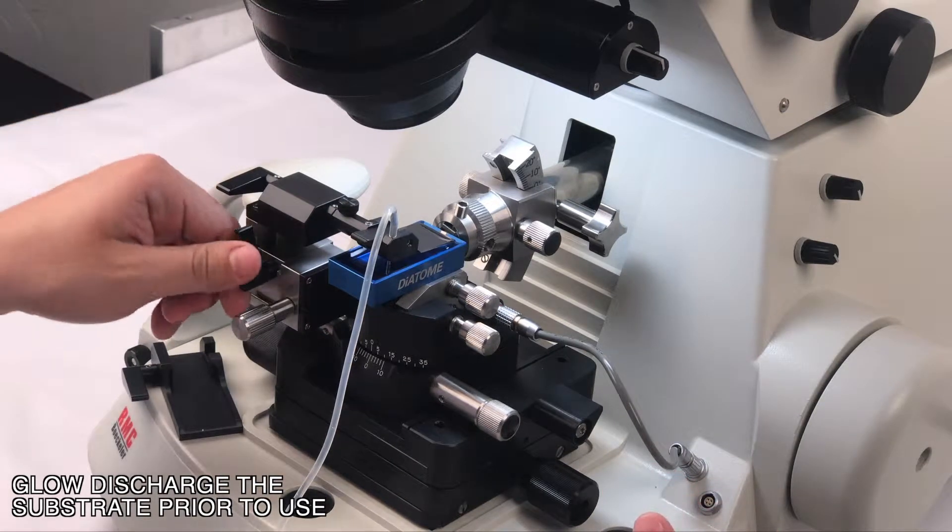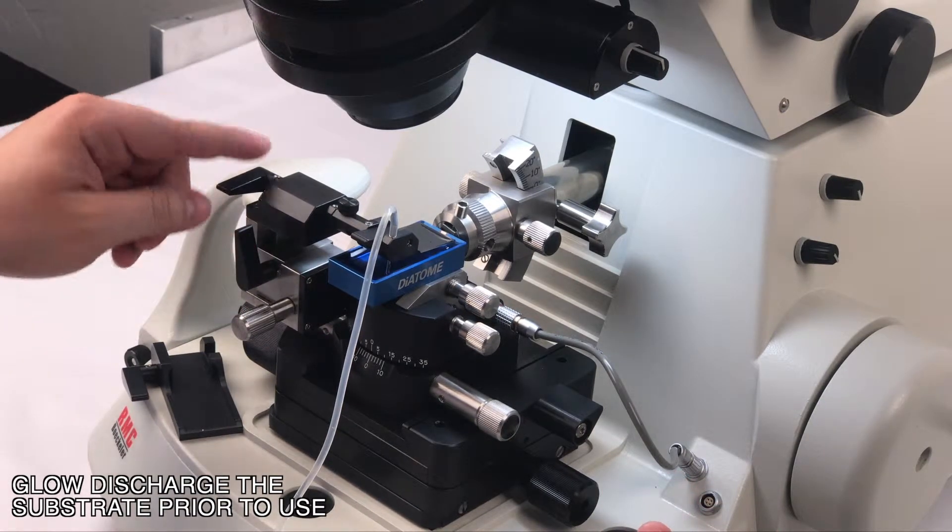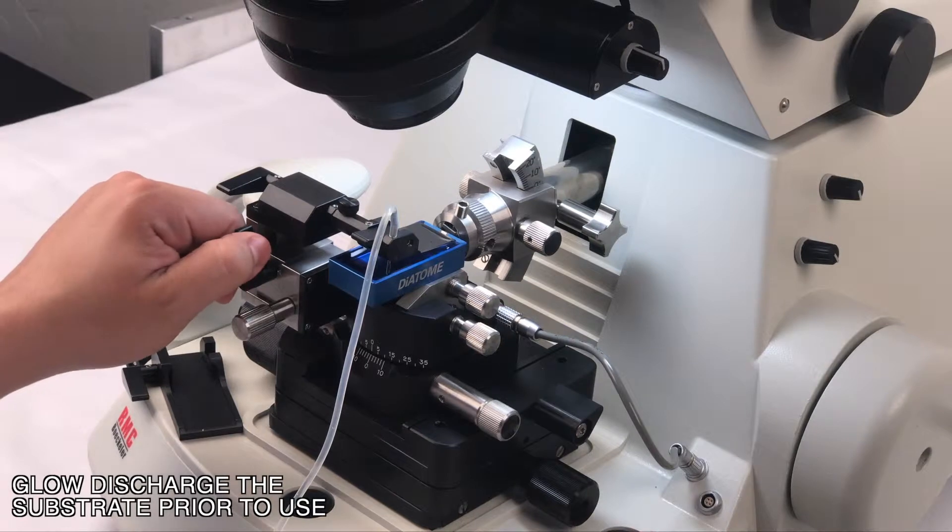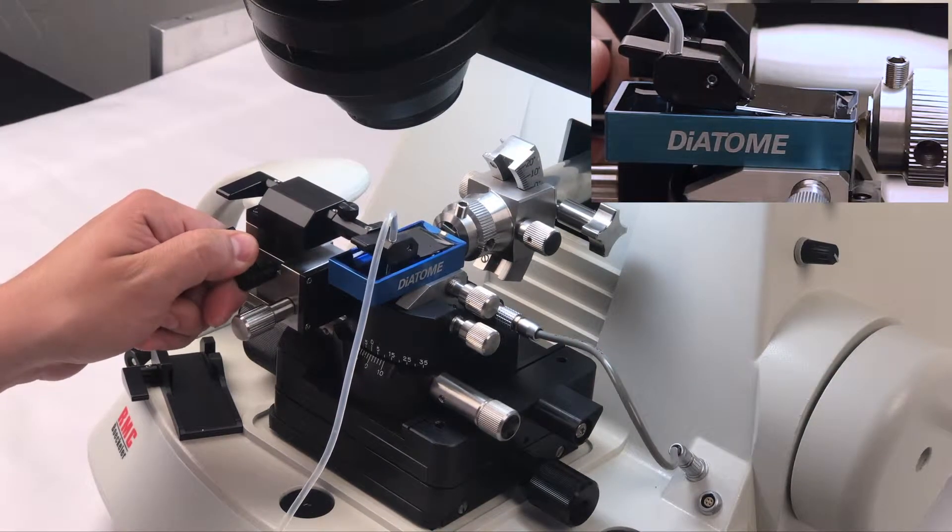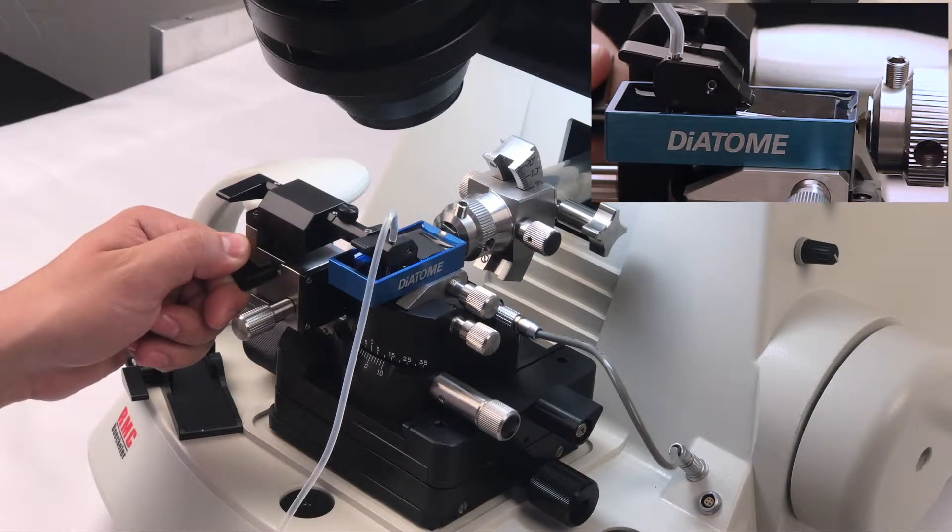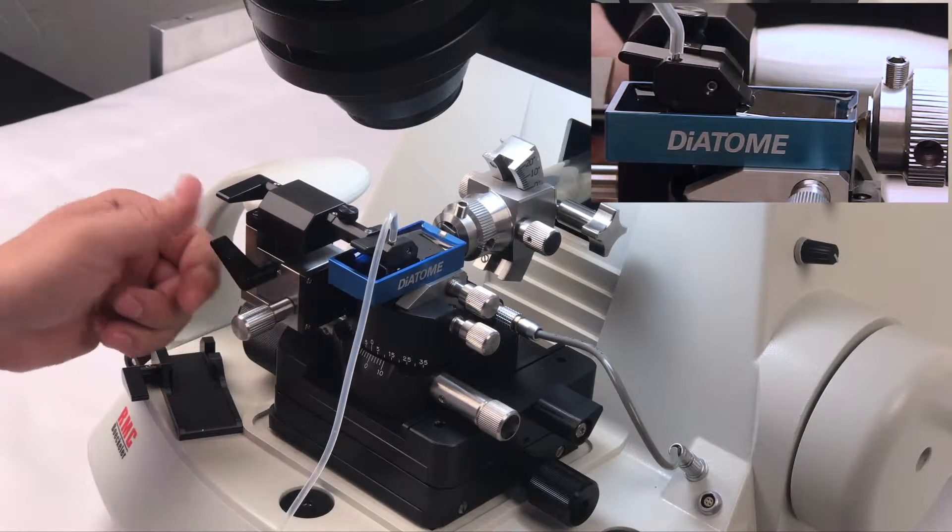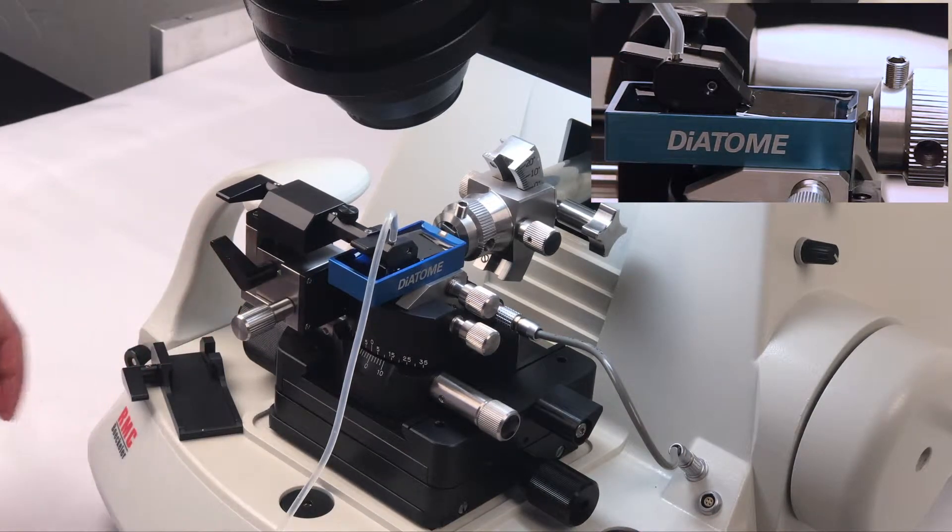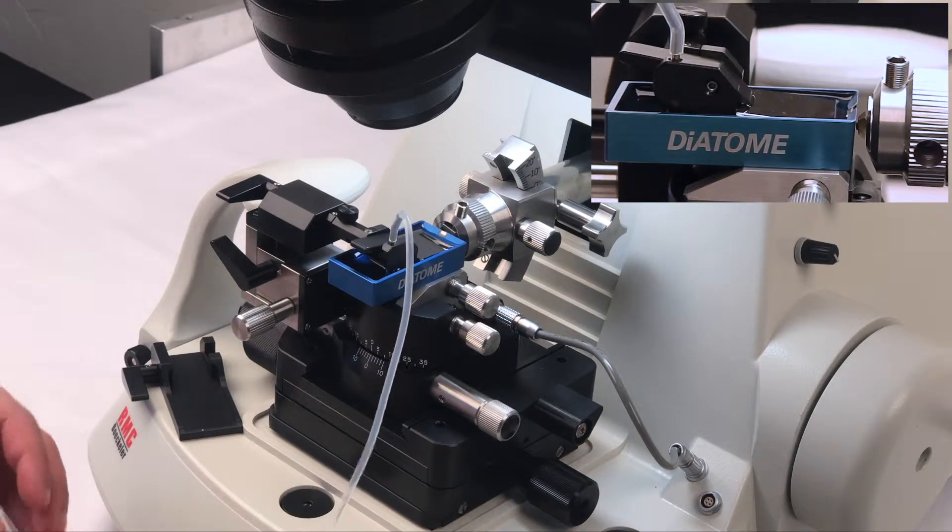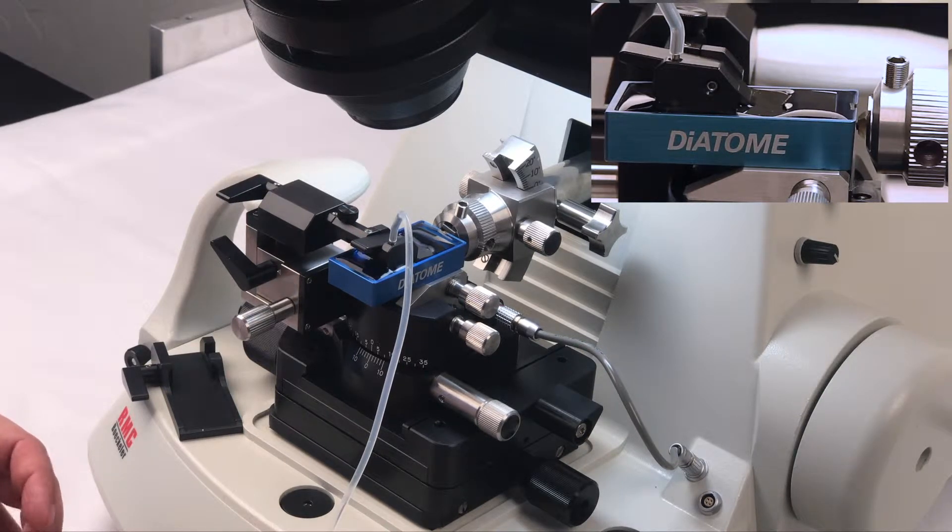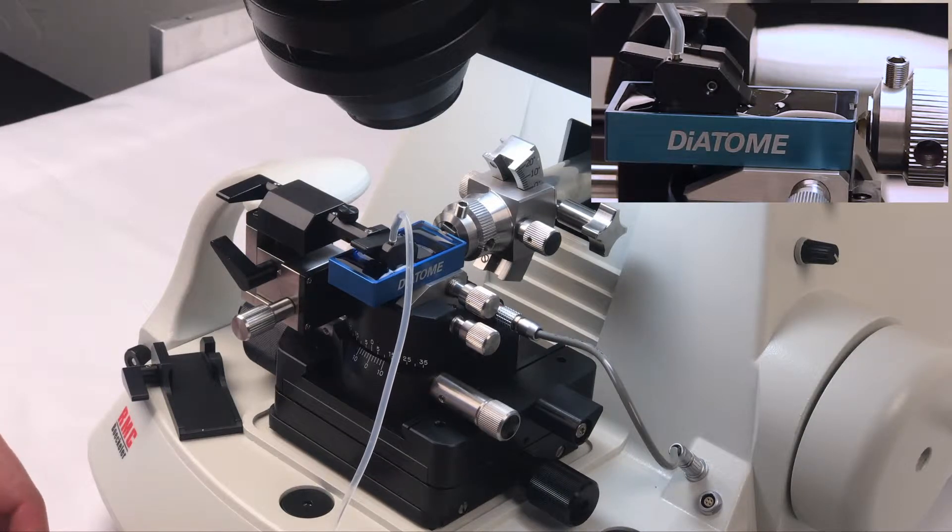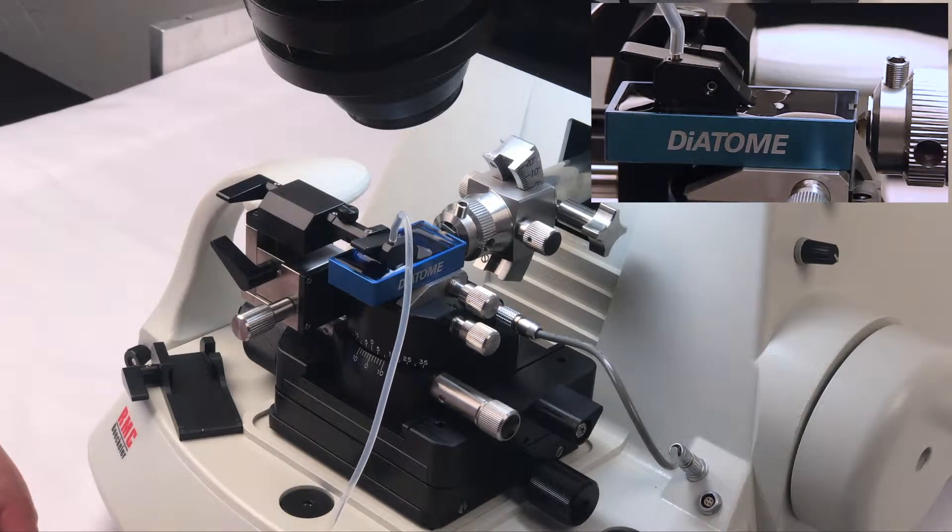The first thing we're going to want to do is lower the ash 2 with the vertical leverage until it sits underneath. At this point we can see that it needs more water, so using our syringe we will add water. Now that we can see the bubble, we can remove a little bit of water.